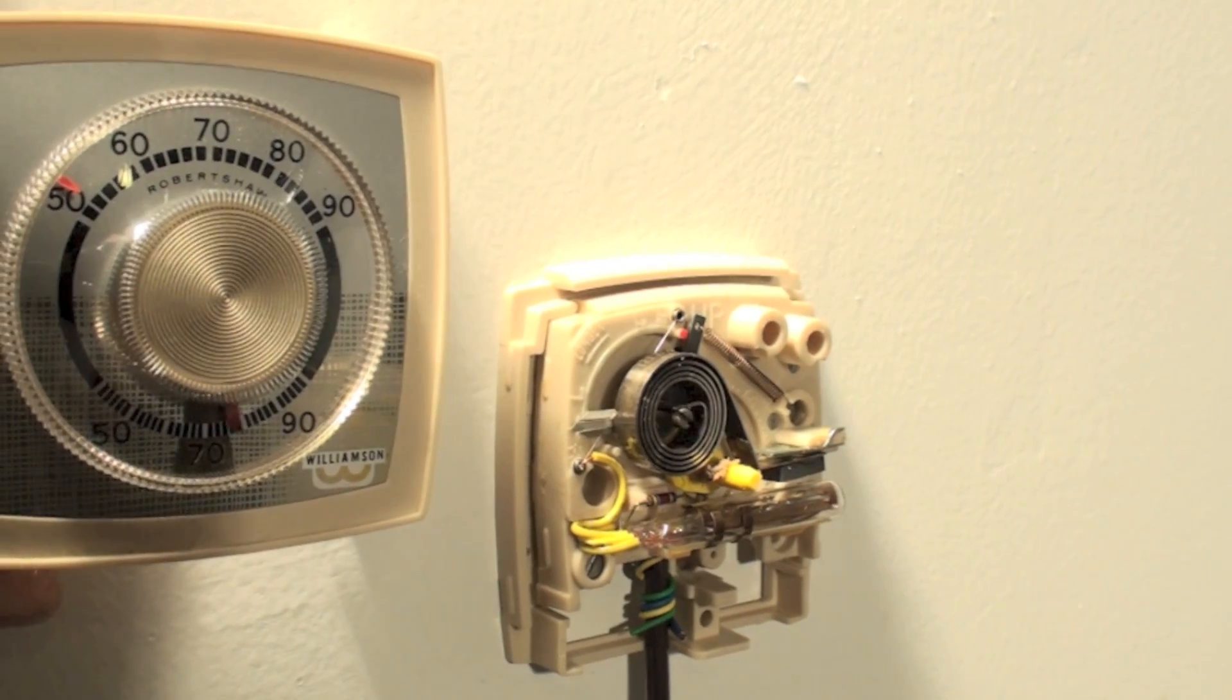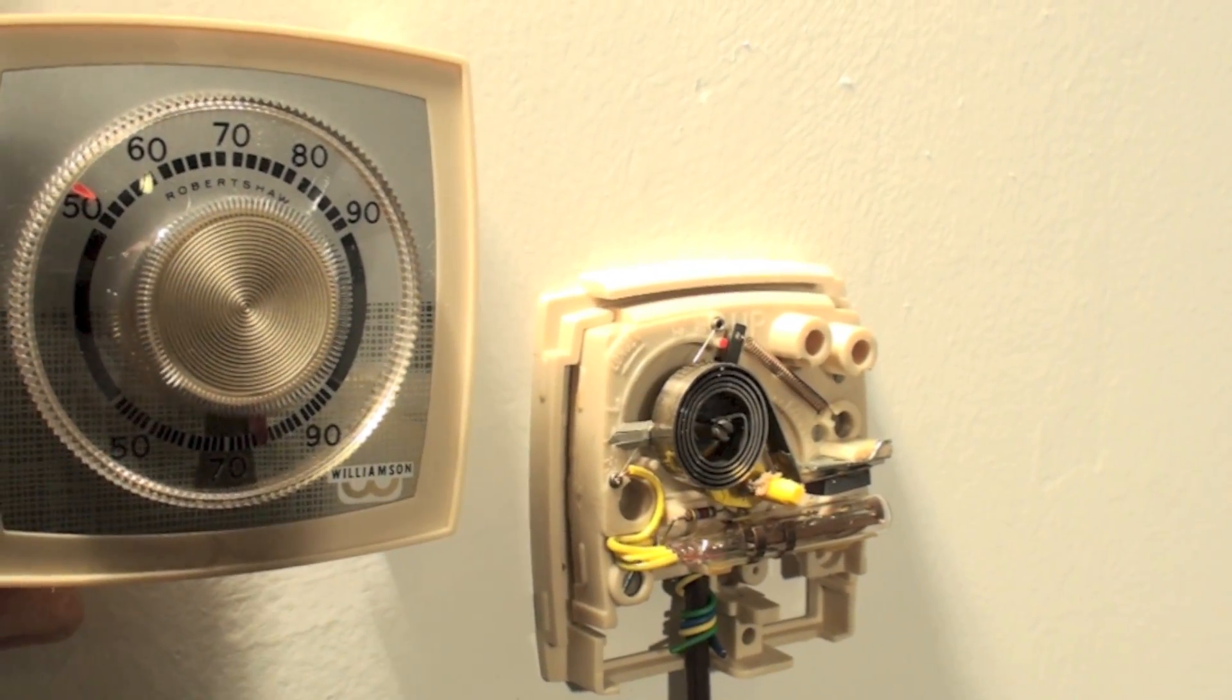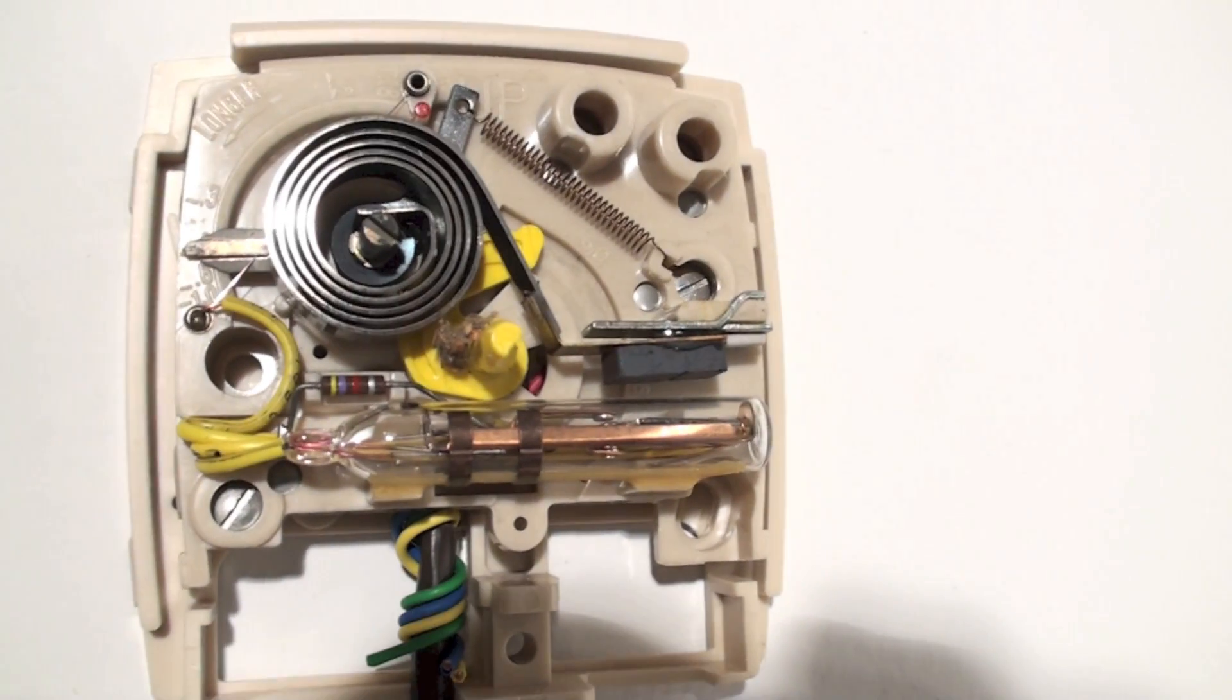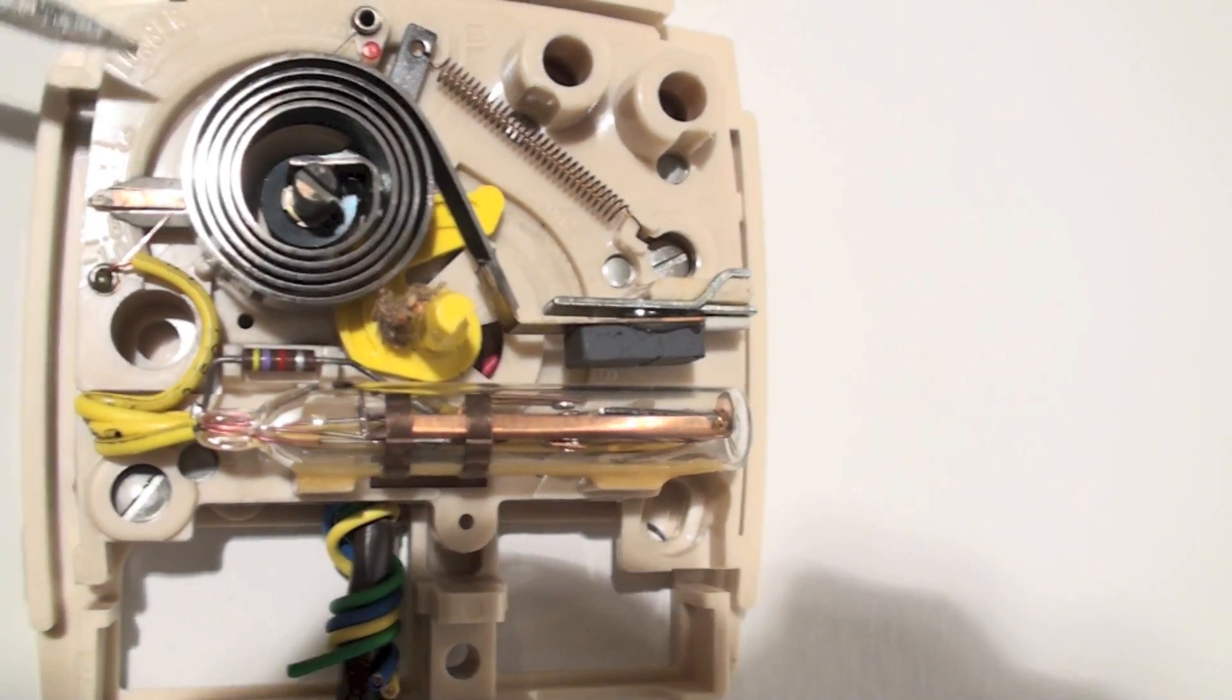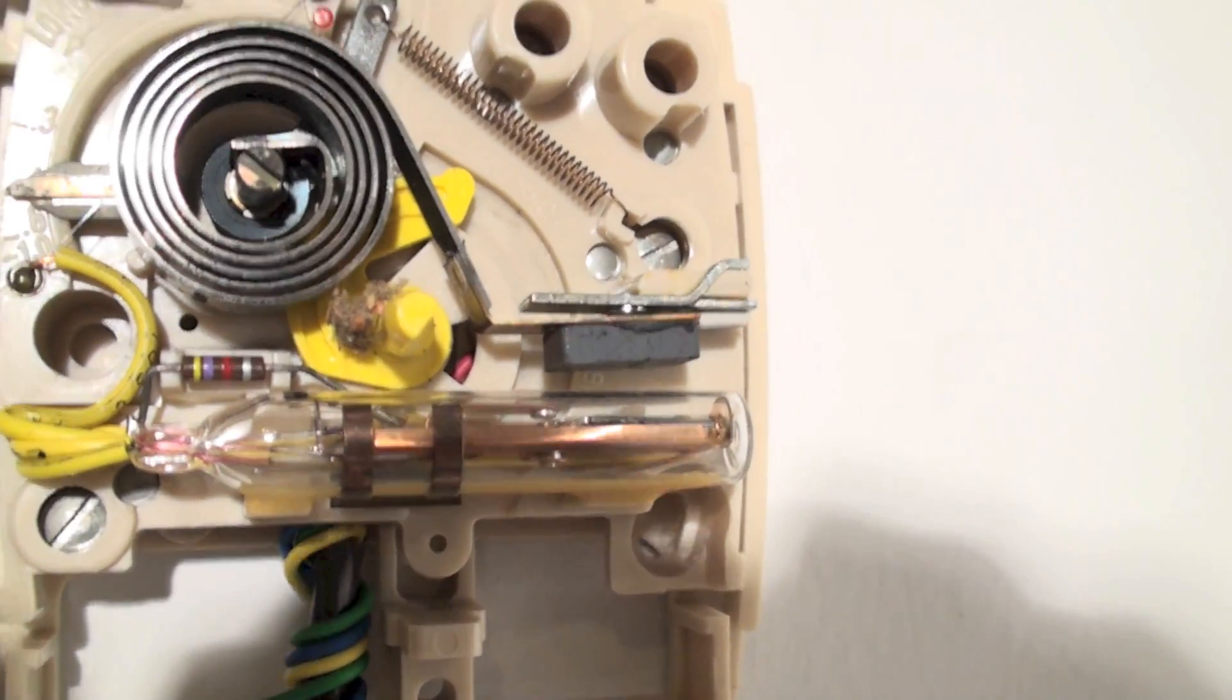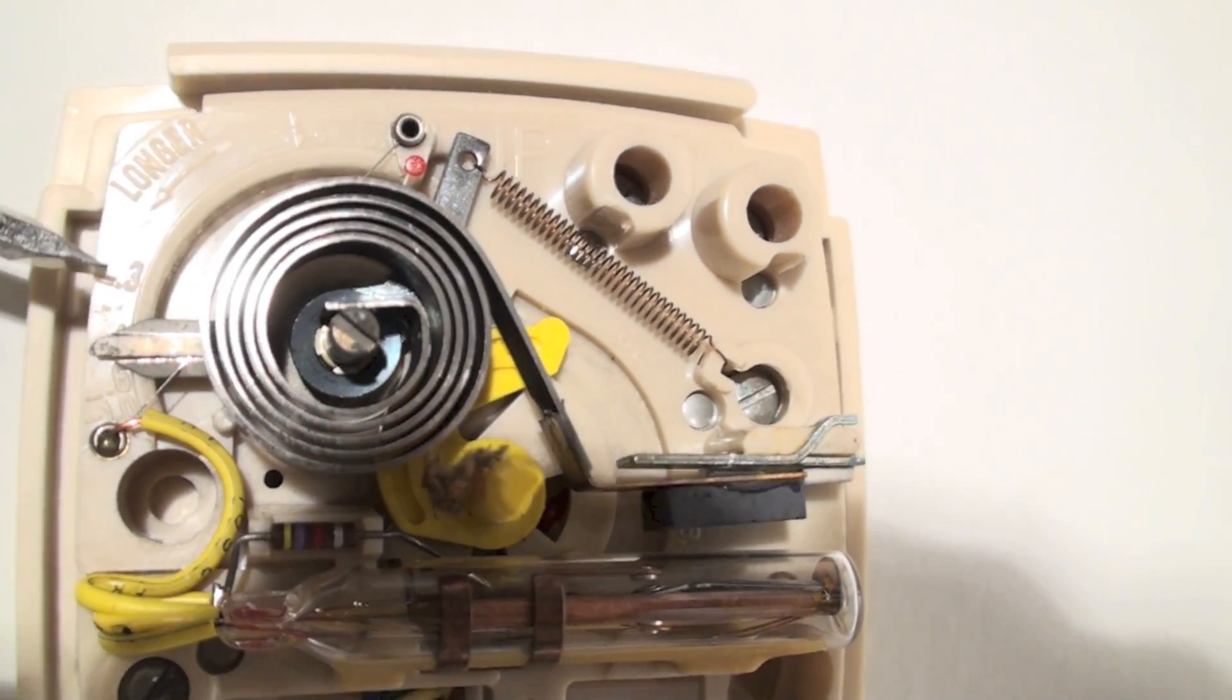This one here is an old thermostat with its cover removed. I'll show you where the anticipator is there. The anticipator on this one is right here. The lever moves up this way for the different settings.